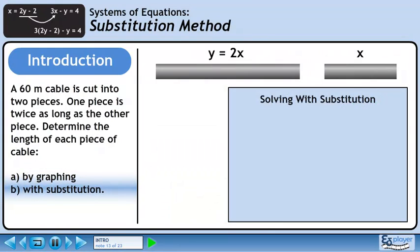Moving on to part B, we'll solve this system using substitution. We already know both equations in our system: Y equals 2X and Y equals minus X plus 60.